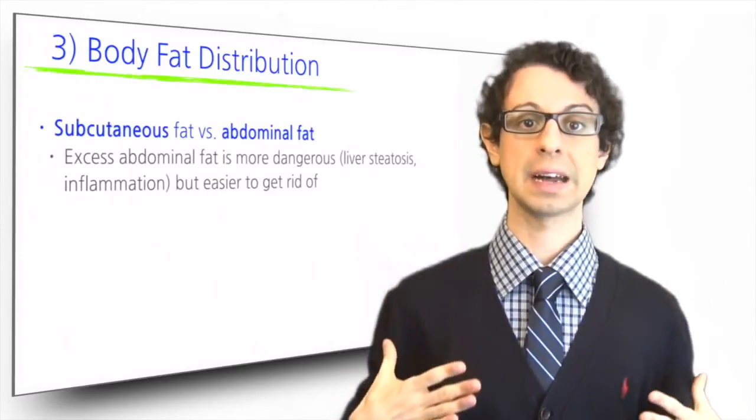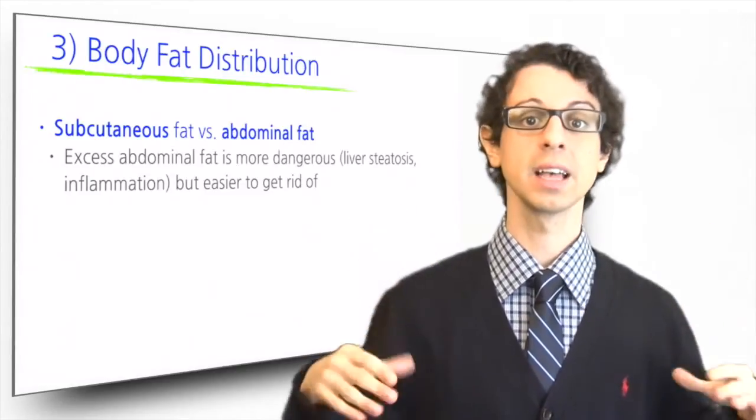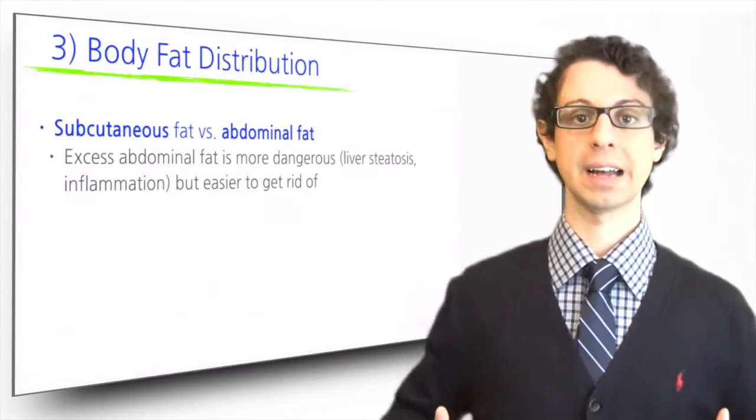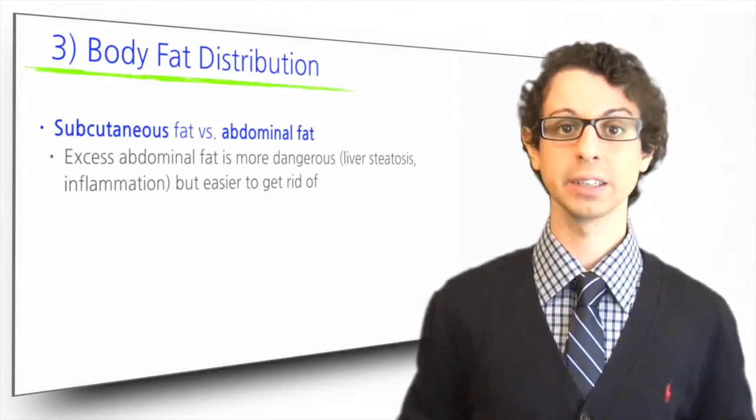We mainly store excess fat in two different locations. One is subcutaneous fat, the fat layer under the skin and above our muscles that protects and insulates us. The other is abdominal fat, which is all around our internal organs in the abdominal cavity to protect them.